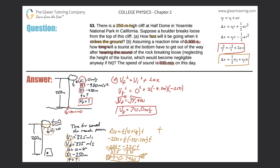Not only does the person need to wait to hear the sound, but they also have to react to it. The time until they can move equals the time for sound to reach them plus the reaction time. So the time until they can move equals 0.746 plus 0.3, which equals 1.046 seconds.